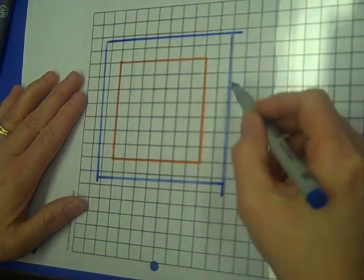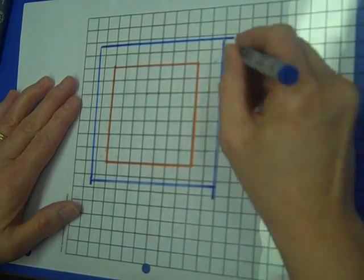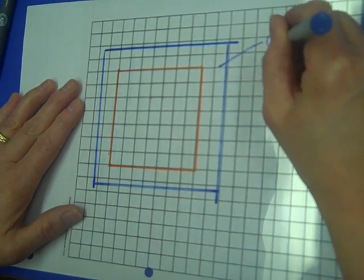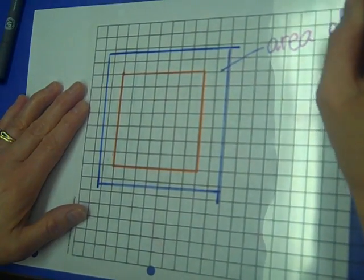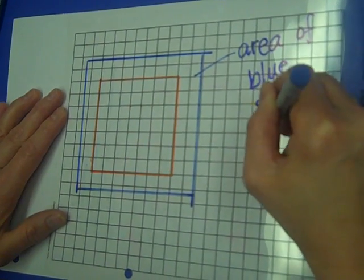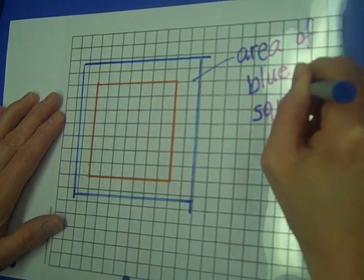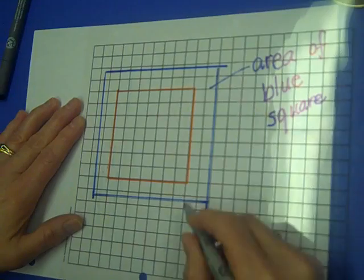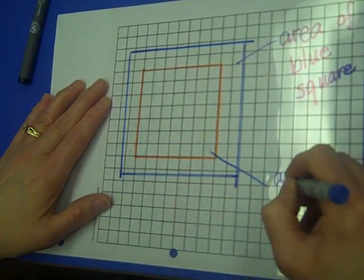Now my circle was halfway in between, I could find the area of the blue square, and then I could find the area of the red square, and my circle was halfway in between.